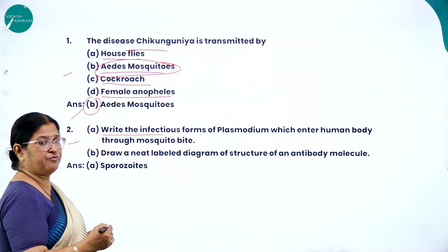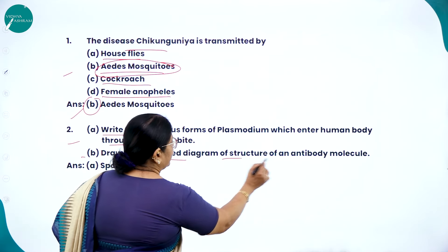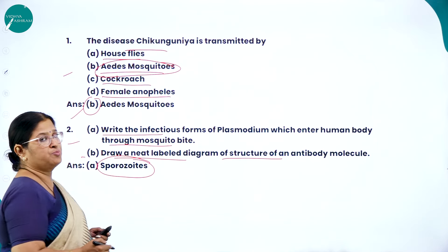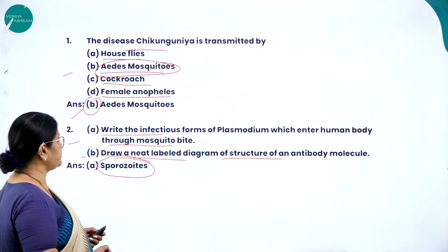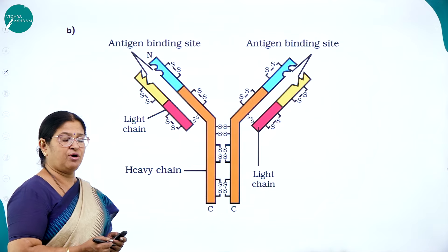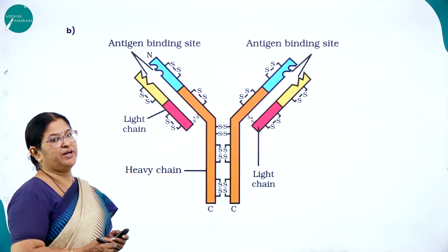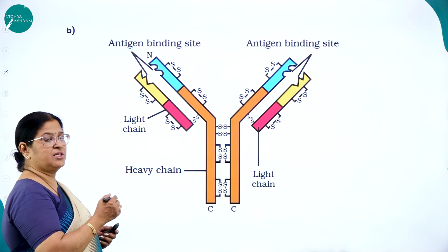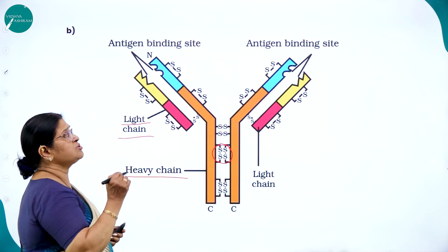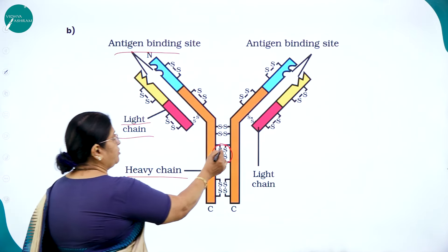Question number two is a split two-mark question: first, write the infectious forms of Plasmodium which enter the human body through a mosquito bite — the answer is sporozoites. Second, draw a neat labelled diagram of the structure of an antibody molecule. The antibody is a Y-shaped structure with four chains: two small light chains and two long heavy chains. The heavy chain is made up of around 400 amino acids and the light chain around 200–250 amino acids, held together by disulfide bonds, with an antigen binding site at the top.